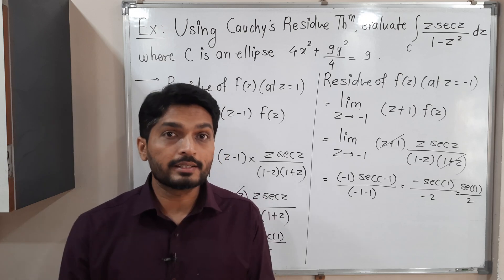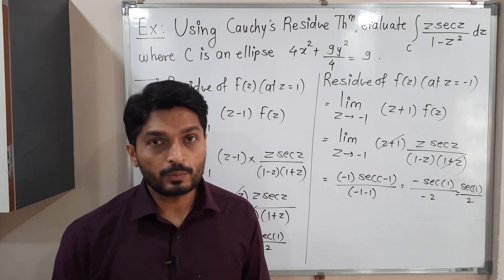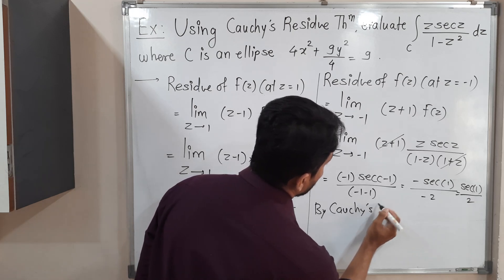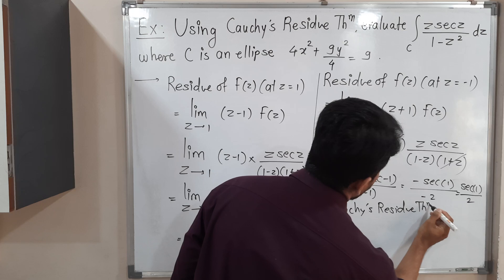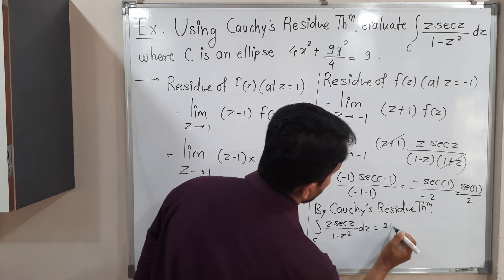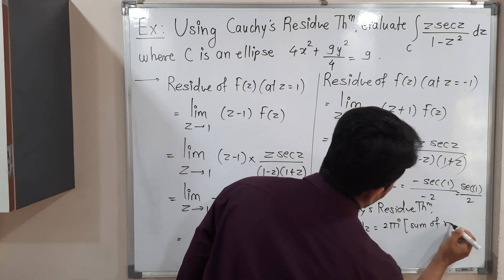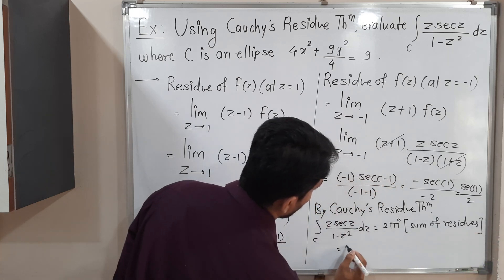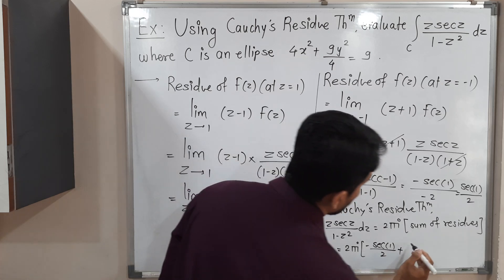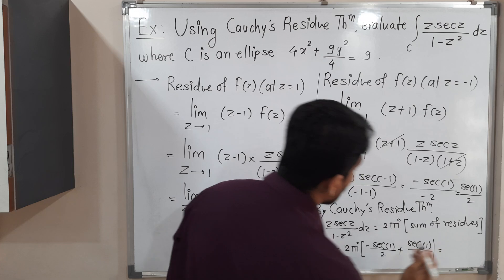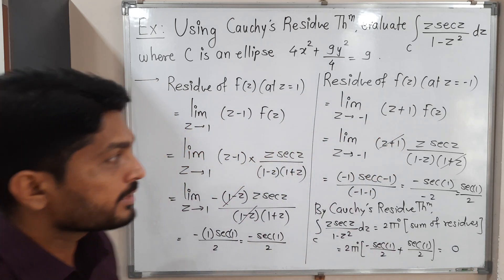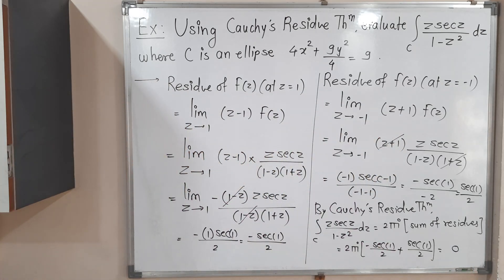We found residue at both singular points inside the curve. Now applying Cauchy's residue theorem: the integral of z·sec(z)/(1−z²) dz over c = 2πi × (sum of residues) = 2πi × (−sec(1)/2 + sec(1)/2). The two residues cancel each other since they have opposite signs, giving 0. Therefore the value of the integration is 0. Thank you, see you in the next video.